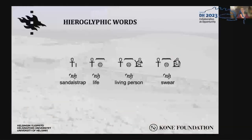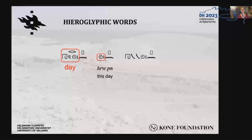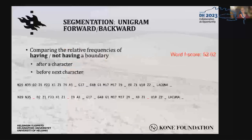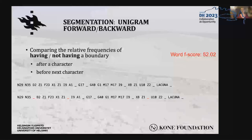Hieroglyphic words often end in classifier signs that help the reader tell apart words with the same consonant root. The words were probably pronounced differently, but only the consonants can be deduced from the writing. Hieroglyphic classifiers can also have phonetic value and be used alone or in some other part of the word — like the circle depicting the sun that tells the word is 'day,' which can represent the word by itself with a stroke. So the place of a sign within words is not constant. We made our own version of the prefix-suffix method, which looks between characters and compares the frequencies of having or not having a boundary after a character and before the next character.